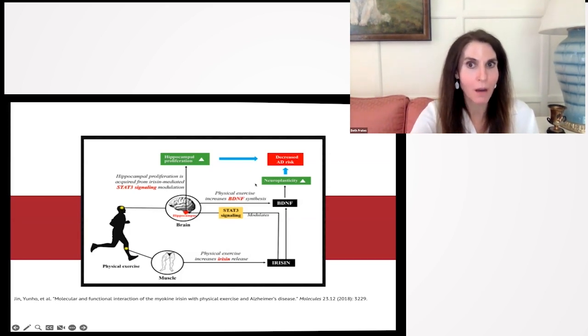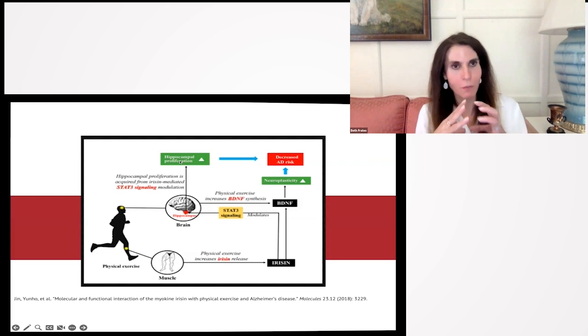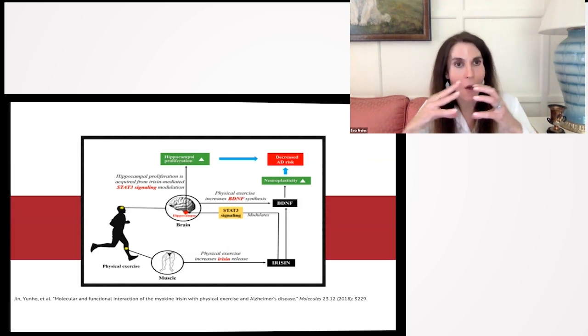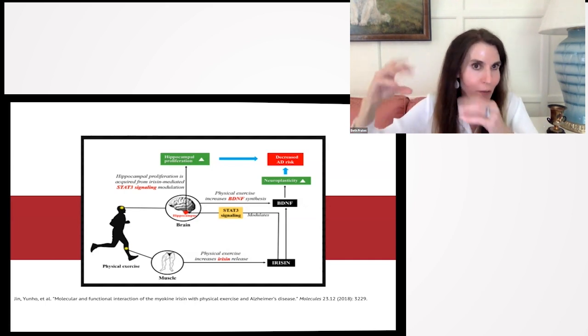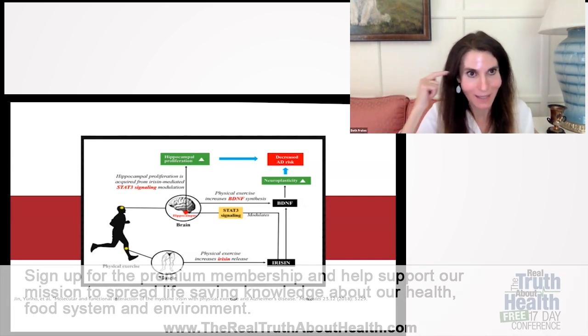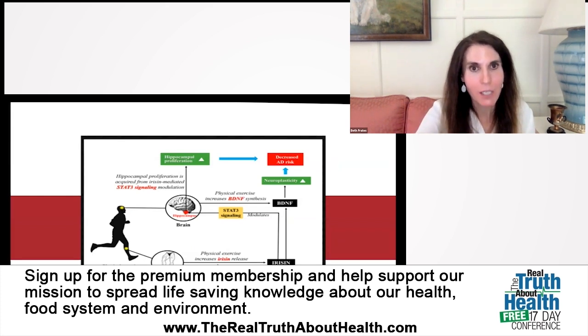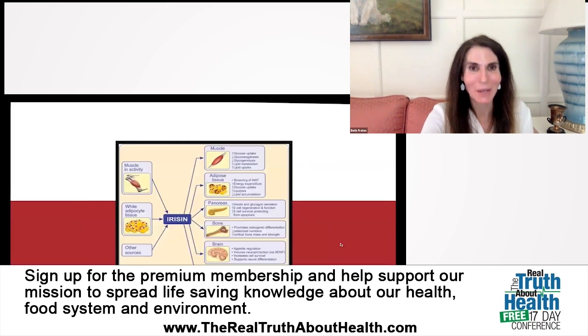That helps reduce our risk of Alzheimer's disease. It is this irisin and through signaling called STAT-3 that we could get that hippocampal proliferation, the volume increase of that part of your brain called the hippocampus that consolidates memories. This is how it's happening. You need to get moving. Again, you might want to stand up, move your muscles around, get this myokine flowing.